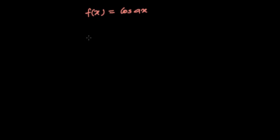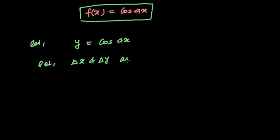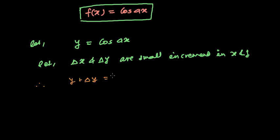Okay, no problem, so let's do it. As usual, we're going to solve this problem. Let's say our function here — you can go by f(x) or simply suppose let y equals to cosine of ax — and then let's suppose delta x and delta y are small increments in x and y. So therefore we can write y plus delta y equals to cosine of (ax + delta x), because there is a small increment in x and y.